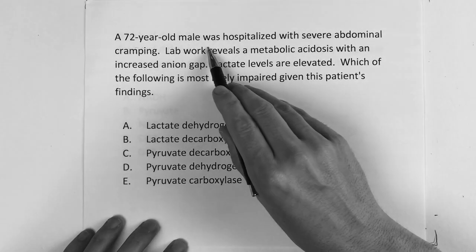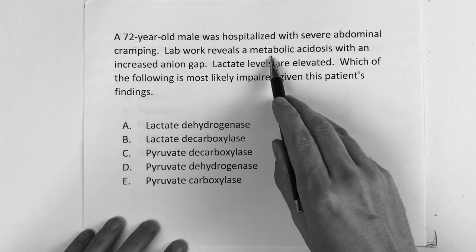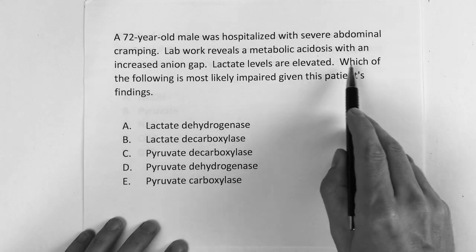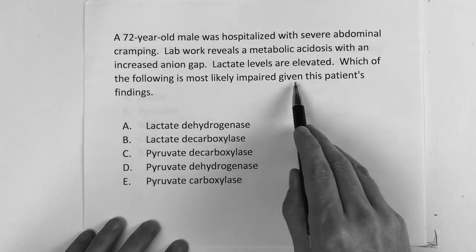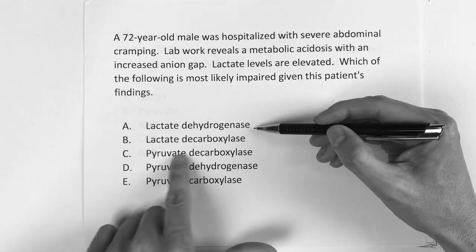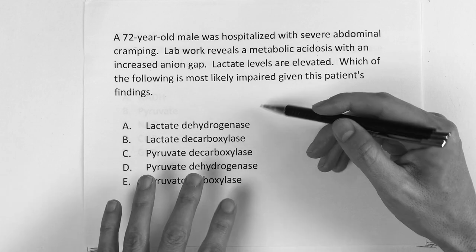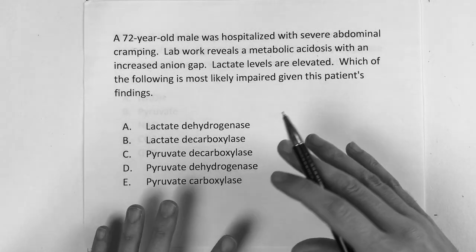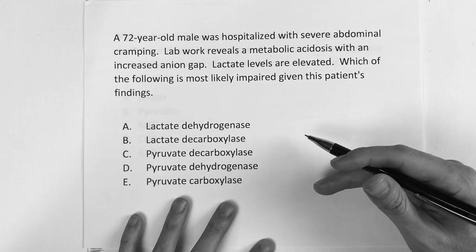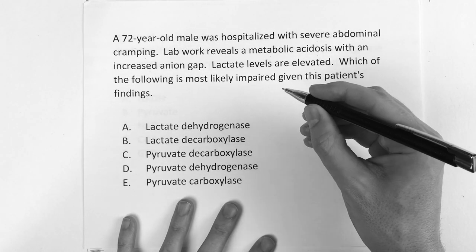So it says a 72-year-old male was hospitalized with severe abdominal cramping. Lab work reveals metabolic acidosis with an increased anion gap. Lactate levels are elevated. Which of the following is most likely impaired given this patient's findings? The answer choices include lactate dehydrogenase, pyruvate decarboxylase, pyruvate dehydrogenase. So you know you're in the biochem section here. You just have to know the basics of the pathways — you don't have to know every little detail.